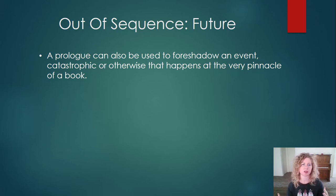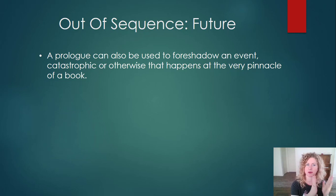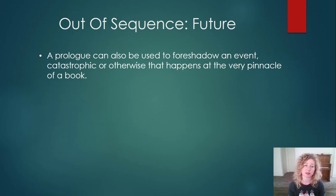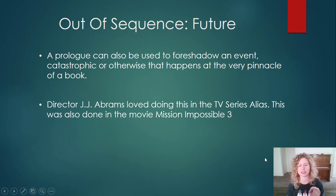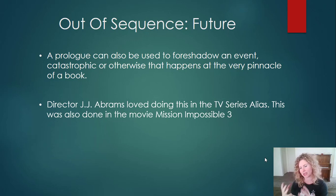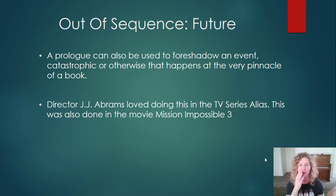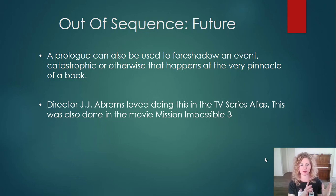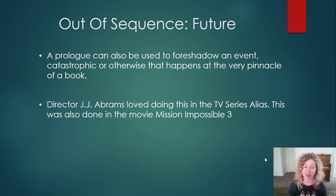Another way is out of sequence future: a prologue can also be used to foreshadow an event — catastrophic or otherwise — that happens at the very pinnacle of a book. Director J.J. Abrams really loved doing this in the TV series Alias. What we get is a snippet of the episode at the very pinnacle of the conflict — we're just like, 'Oh my gosh, she's tied up! What happened? How did she get there? Why is she injured?' So we're getting a little snippet of what has happened three days in the future, and then we go back in time to the present, where it will say something like 'three days previously' or '24 hours earlier.'